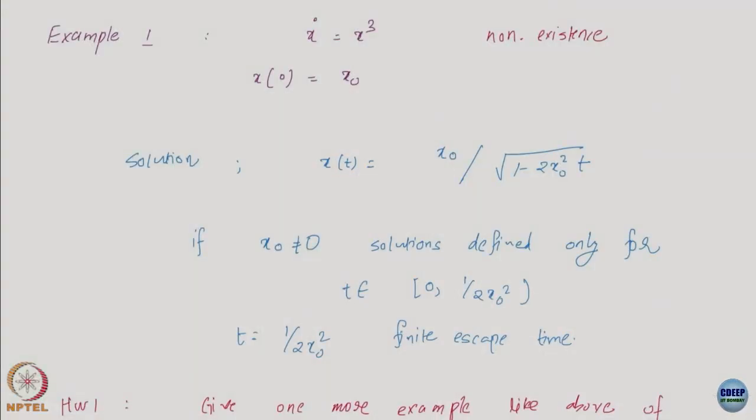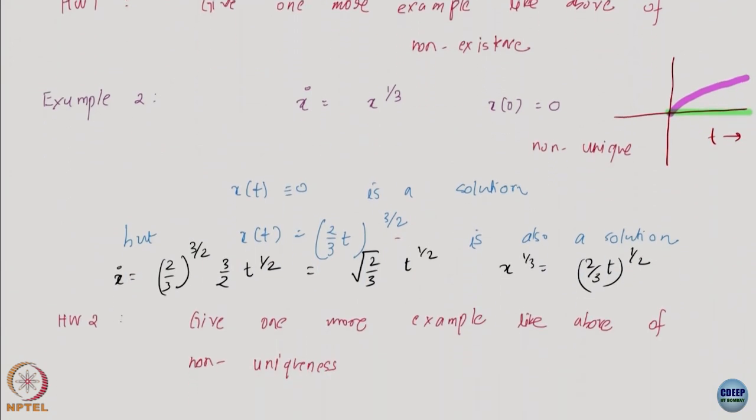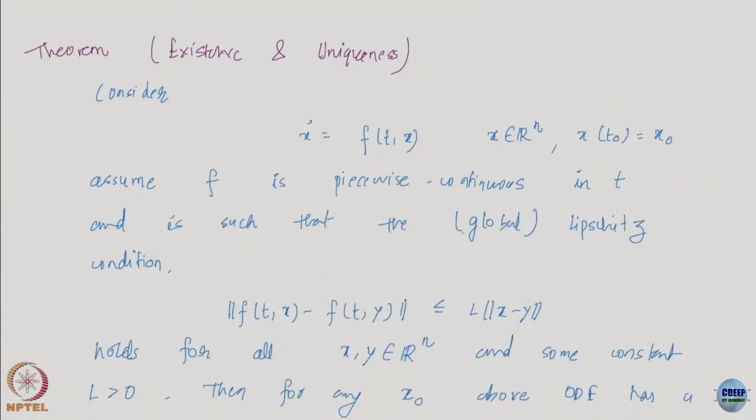This is to do with existence and uniqueness of solutions. We saw some examples of when you may have non-existence and non-uniqueness of solutions, and we got a feel for how this can create problems for us in terms of analysis. At the end, we made a blanket assumption that we are not going to consider these extreme cases.